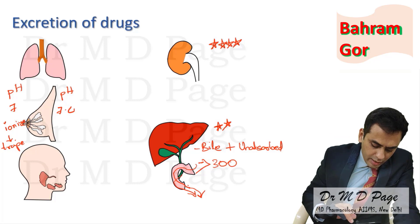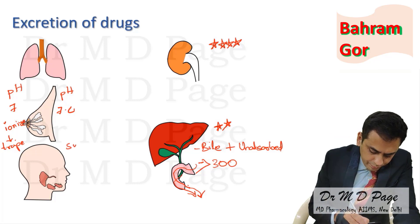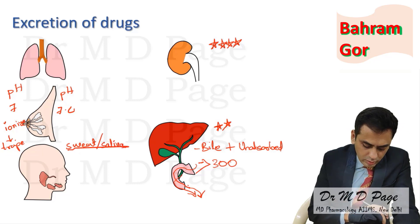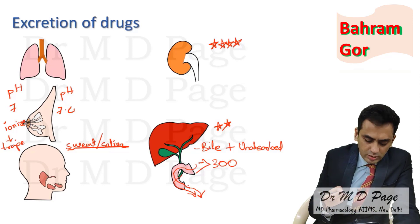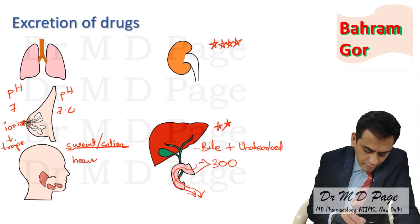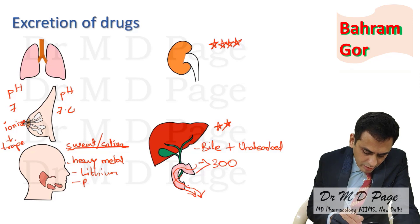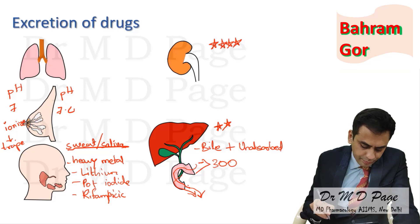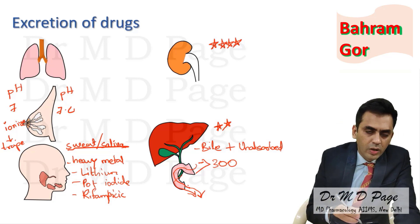Drug excretion via sweat or saliva is a route important for very few drugs. To remember which drugs are excreted via sweat or saliva, you can use the mnemonic for metallic taste — heavy metals are excreted via sweat and saliva. You can also remember lithium, which is again a metal, potassium iodide, and rifampicin. These are the drugs excreted via sweat or saliva.